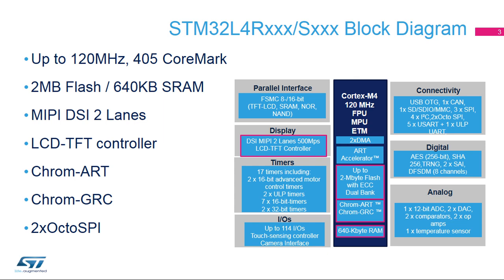The Chrom-GRC Round Display Memory Optimizer allows up to 20% of graphic resources optimization. Additional features include the LCD TFT controller and MIPI DSI controller supporting two lanes, and two OctoSPI interfaces supporting flash and SRAM memory.